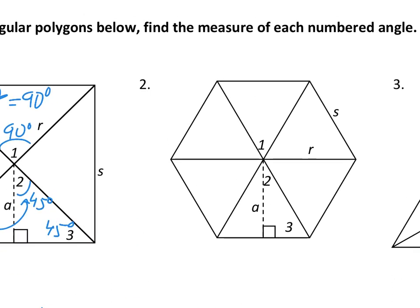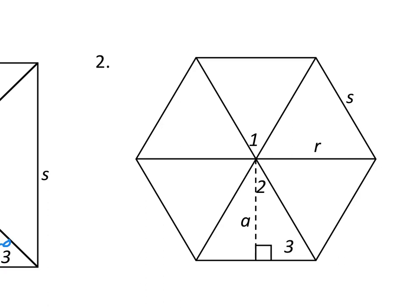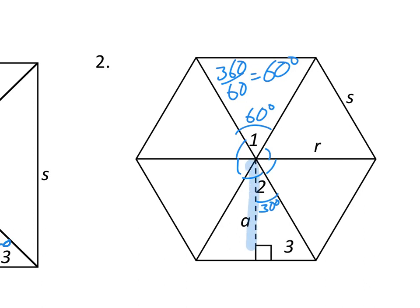What if we have six sides? We find those angles by taking 360 divided by 6, which gives us 60 degrees for each central angle. If we cut that in half, we get angle 2 equal to 30 degrees. Then this little right triangle tells us that angle 3, which is the remaining angle in the right triangle, is going to be a 60-degree angle.